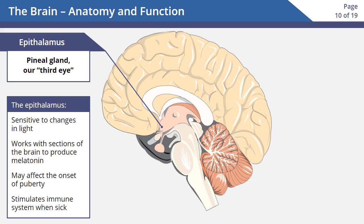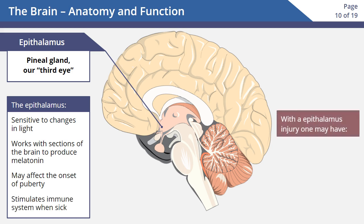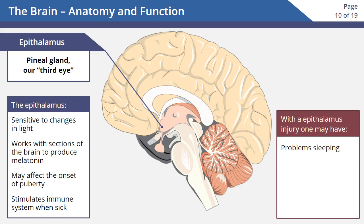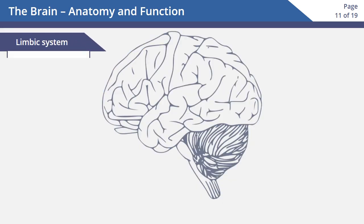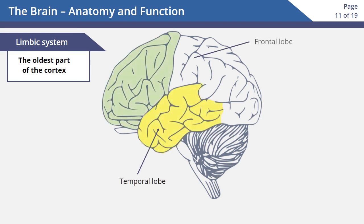The epithalamus may also affect the onset of puberty and it stimulates our immune system when we get sick. Someone with an injury to the epithalamus may have problems sleeping due to a lack of melatonin, or have a suppressed immune system. They may also experience seasonal affective disorder (SAD) and depression.